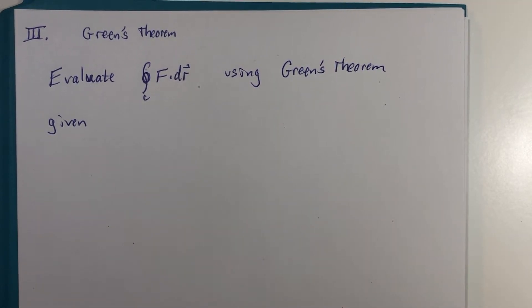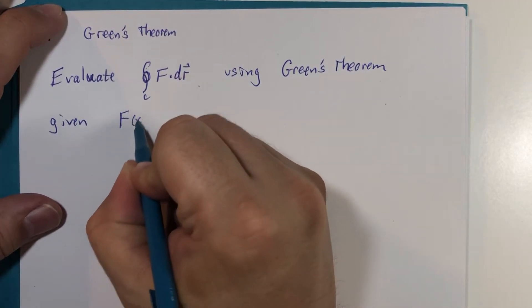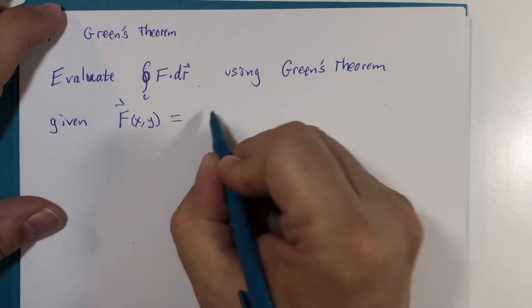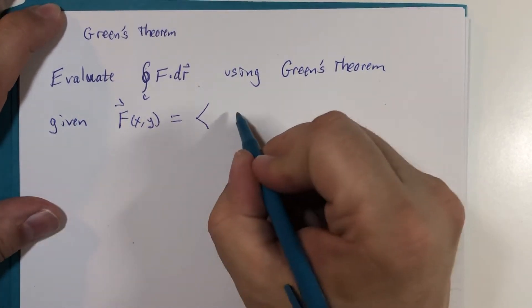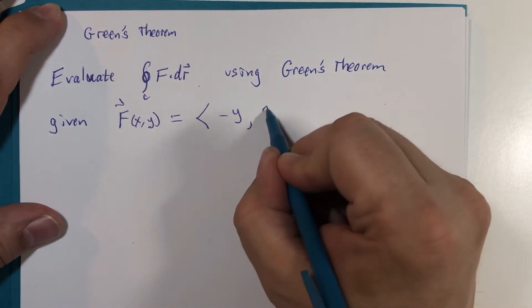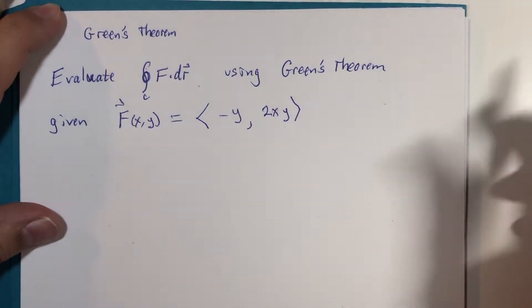And here is what the given information is. The vector field in question is defined by negative y comma 2xy. Those are the two components of the vector.